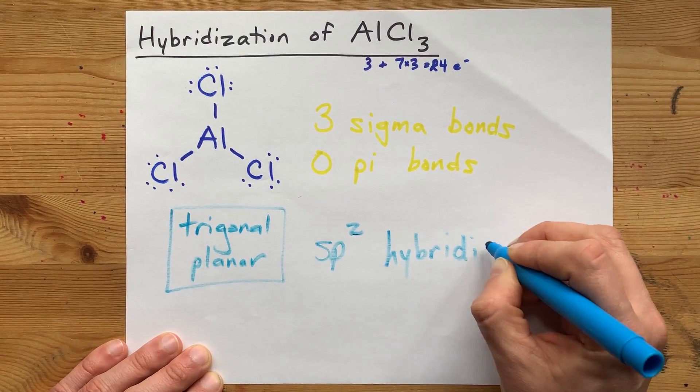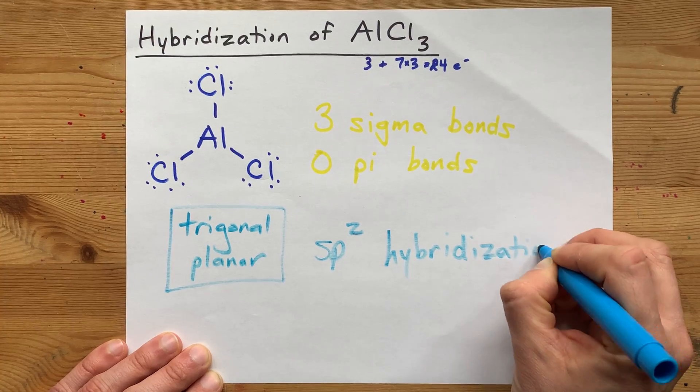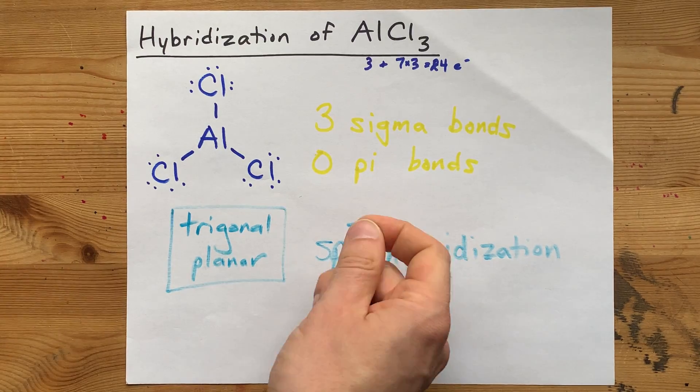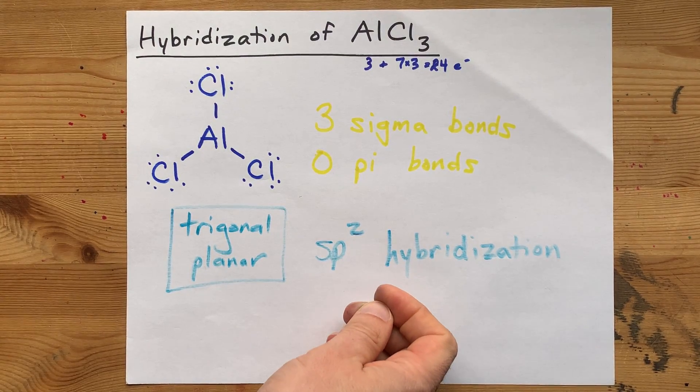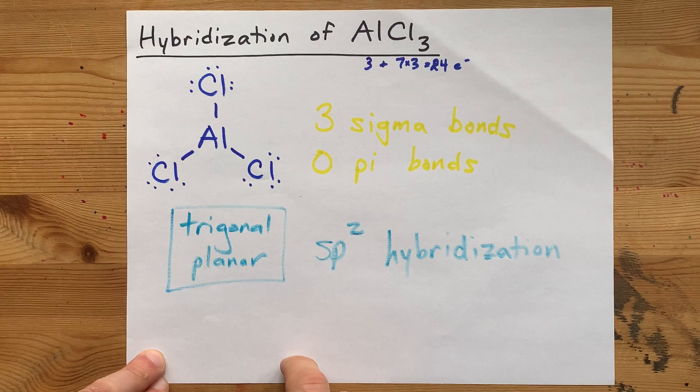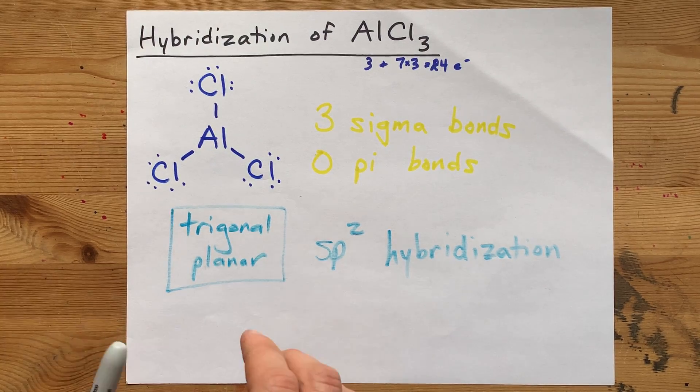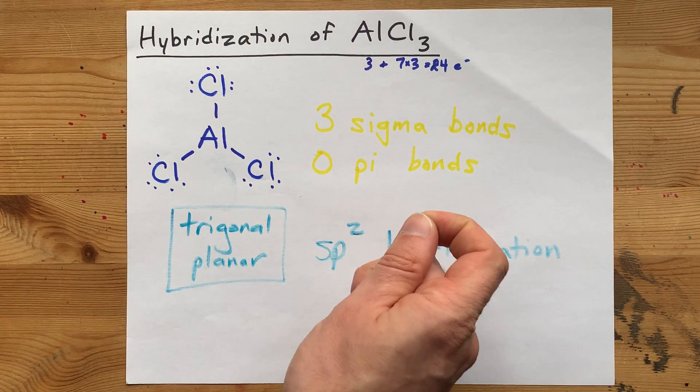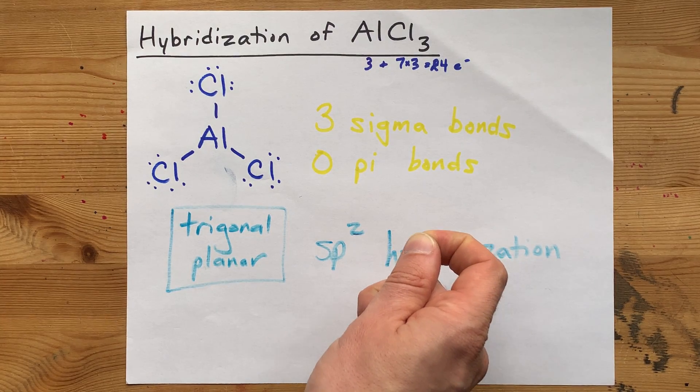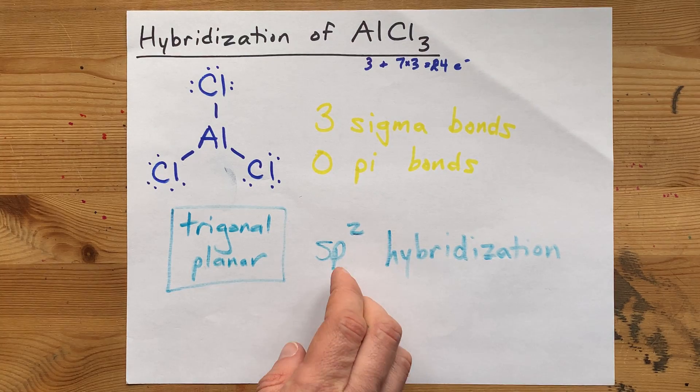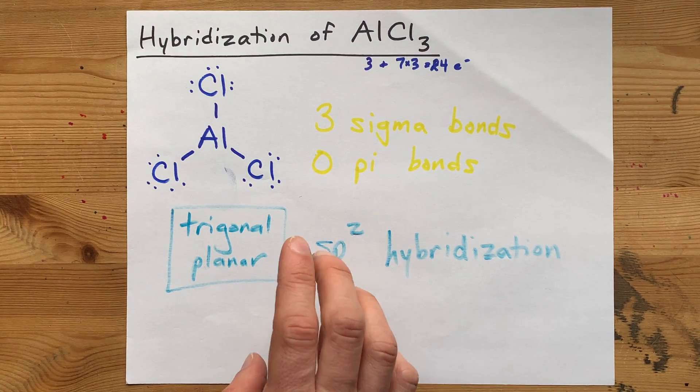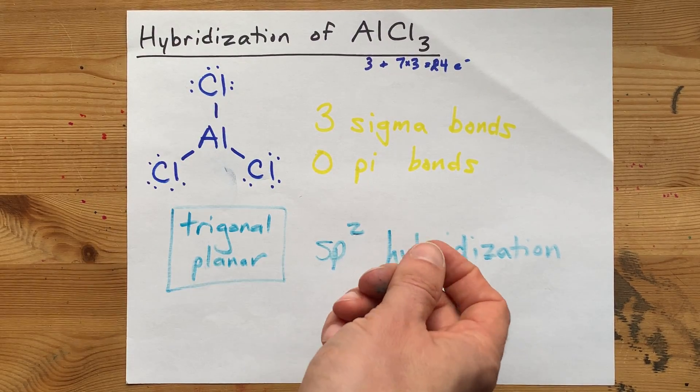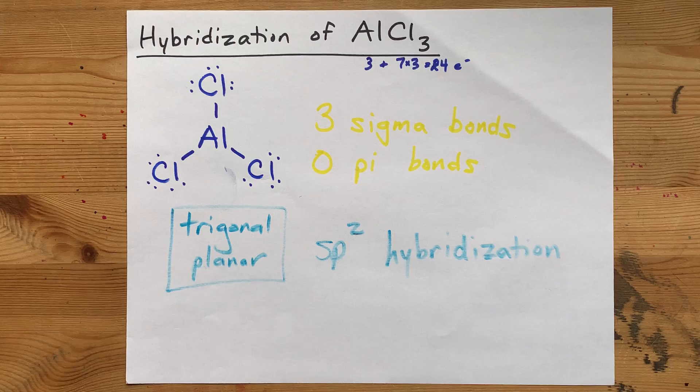sp2 hybrid orbitals arrange themselves in a trigonal planar fashion. There is a leftover 2p orbital, that subshell 2p orbital, that is above and below the aluminum here, that is unoccupied. Once you hybridize the orbitals that are required to make the sp2 hybridized orbitals that make these sigma bonds, in case you're wondering where it went.